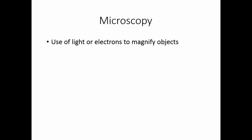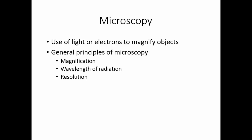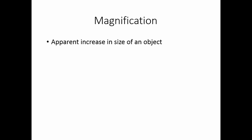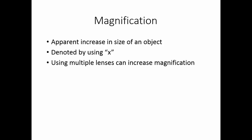Microscopy depends on the use of light or electrons to magnify objects. Light and electrons are part of the electromagnetic spectrum. Magnification, wavelength of the radiation used, resolution, and contrast all have to be taken into consideration for microscopy to work. Magnification is increasing — or apparently increasing — the size of an object. We use 'x' at the end of a number to indicate how many times something has been magnified. To increase magnification, you can use multiple lenses, but there is a point at which you get big images that are faint and unclear — this is called empty magnification.